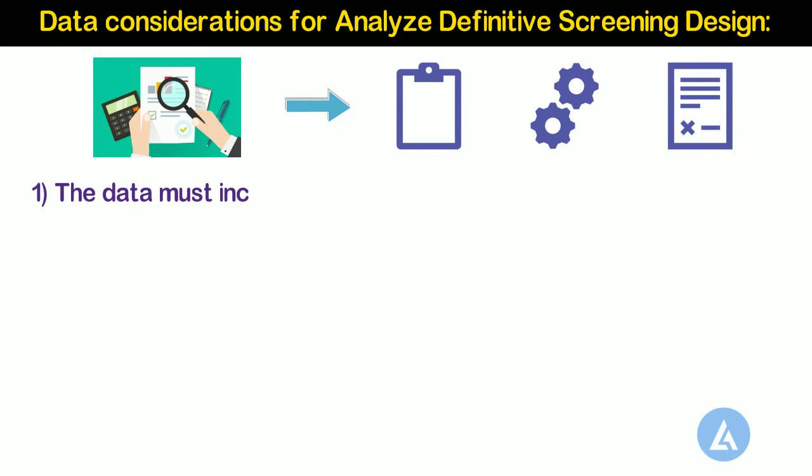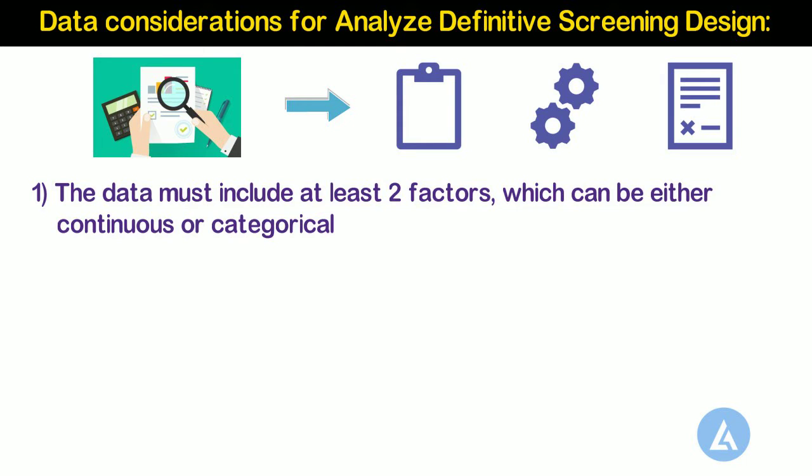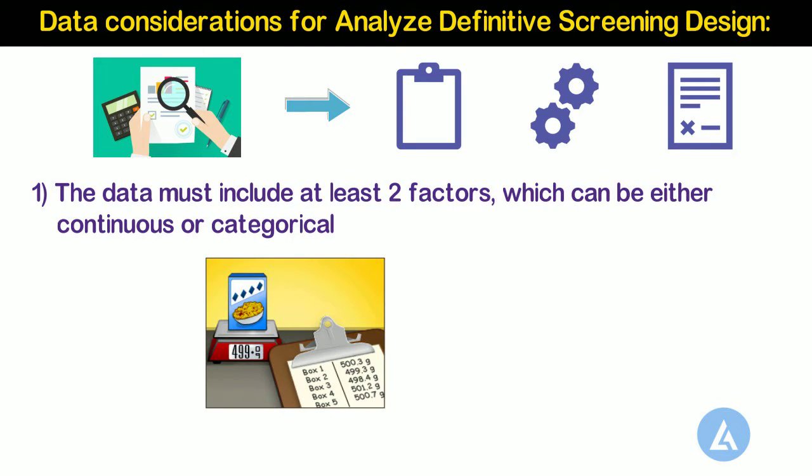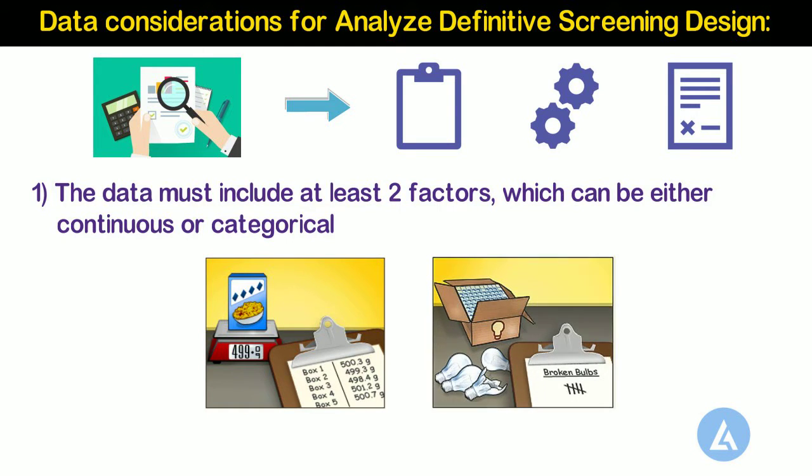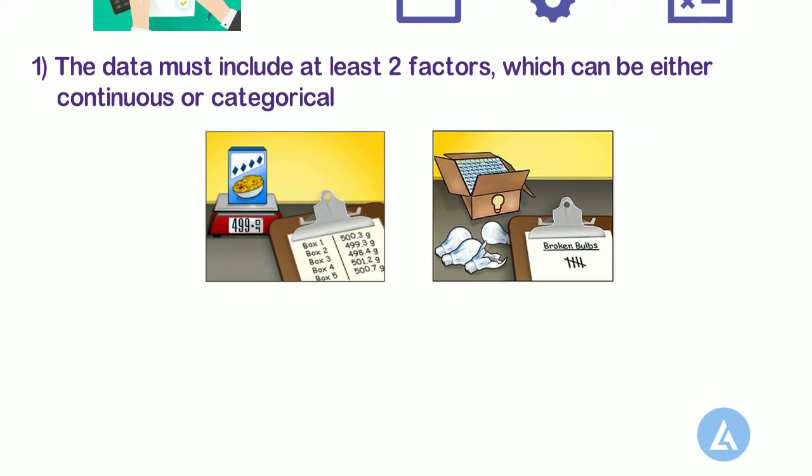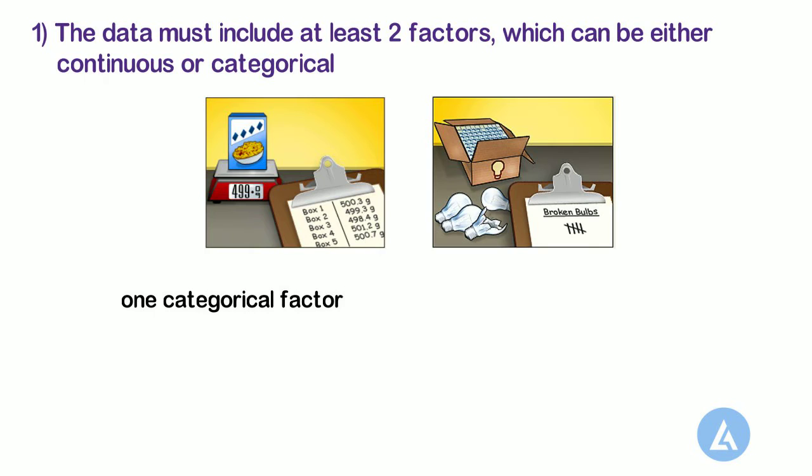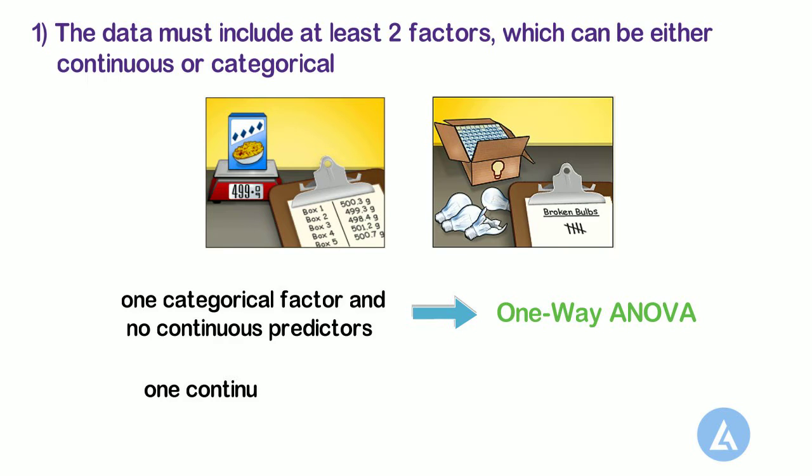First, the data must include at least two factors which can be either continuous or categorical. A designed experiment in Minitab must have at least two factors that are either continuous or categorical. If you have only one categorical factor and no continuous predictors, use one-way ANOVA. If you have one continuous factor, use fitted line plot.